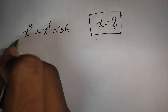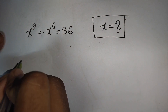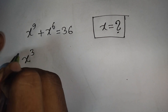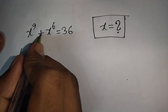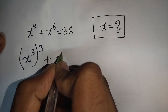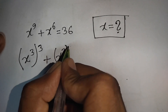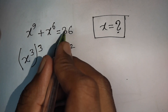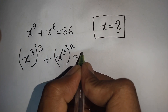Find the value of x. We have x to the power 9, which is the same as (x³)³, and x to the power 6, which is the same as (x³)². So the equation x⁹ + x⁶ = 36 is rewritten using these equivalences.